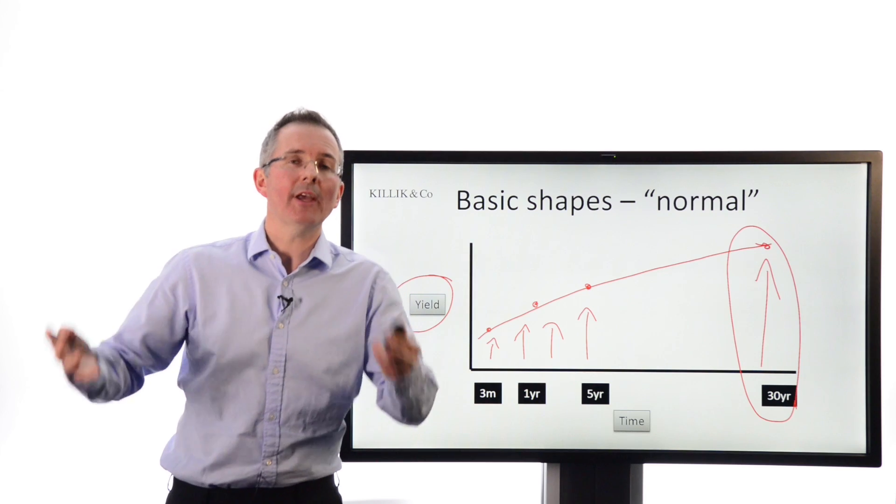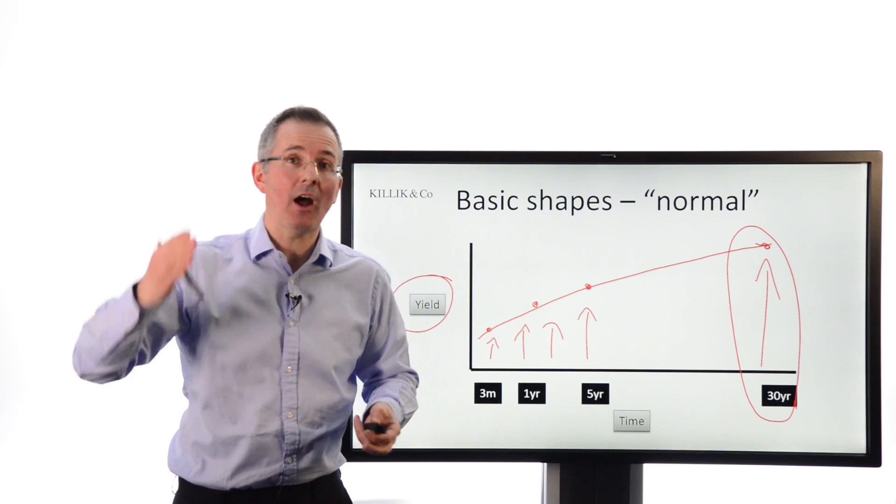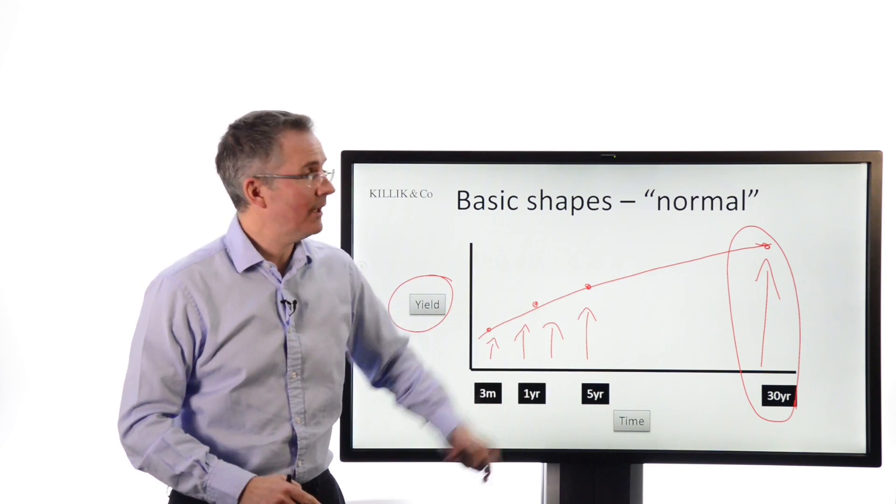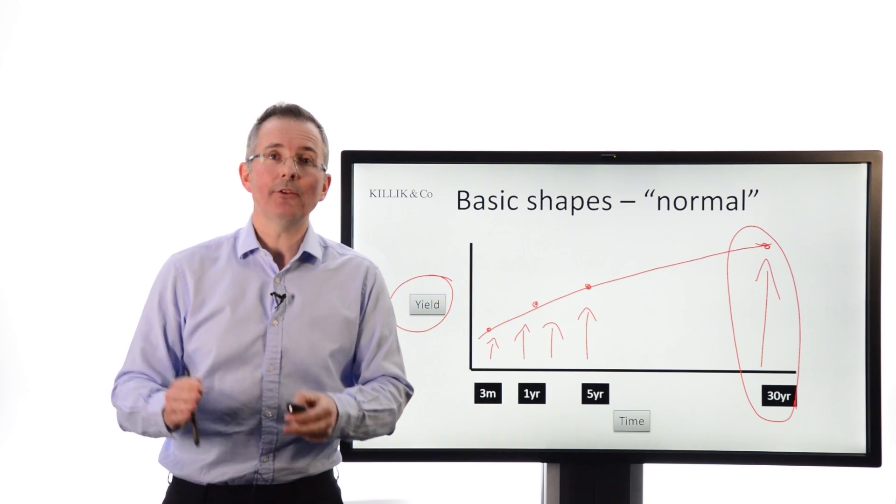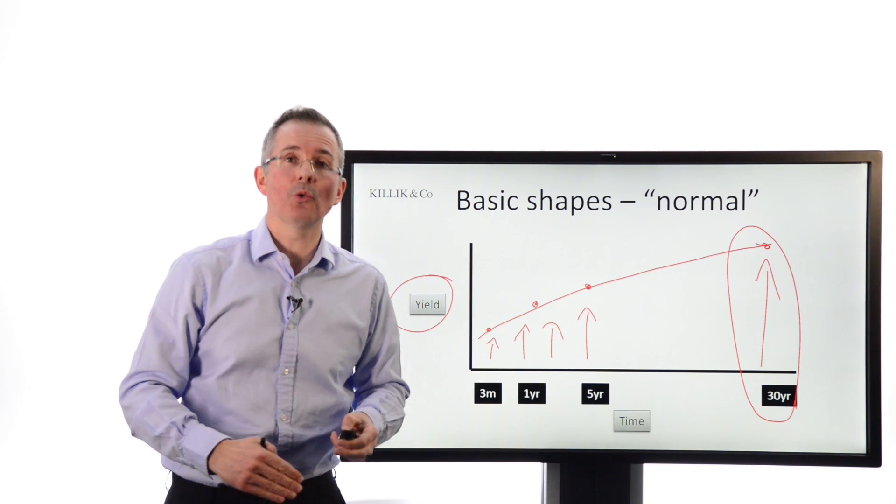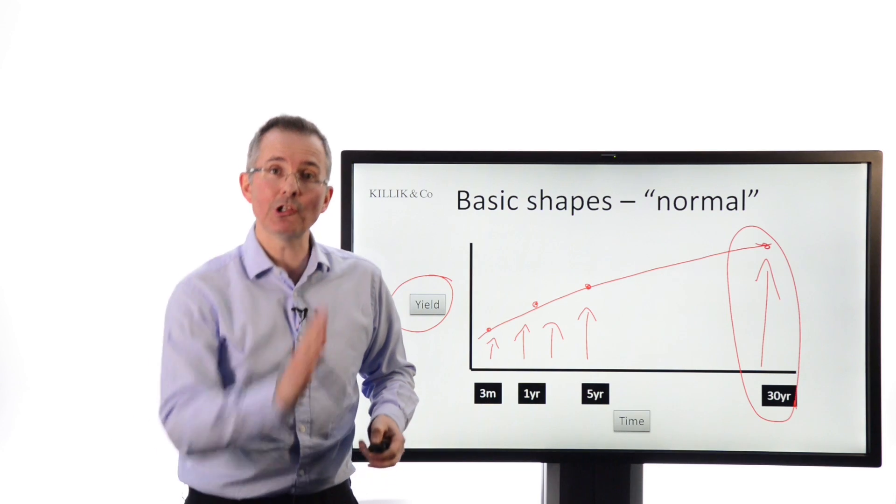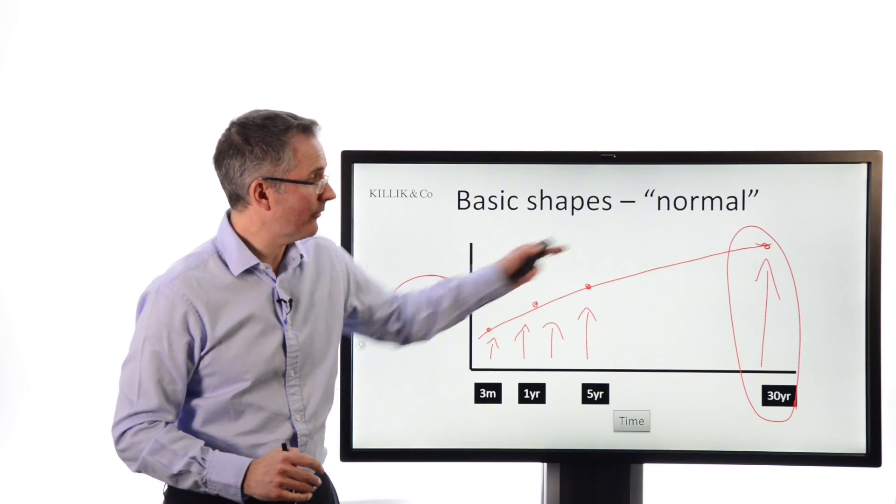Because the income return on that fixed income investment isn't going to change, whereas interest rates, rates available on deposit accounts, anything with a variable rate of interest are going to change. So in a nutshell, you'd expect the price of those longer-dated securities to be a bit lower than shorter-dated, and that's going to tend to push up the yield, hence the shape of the graph.